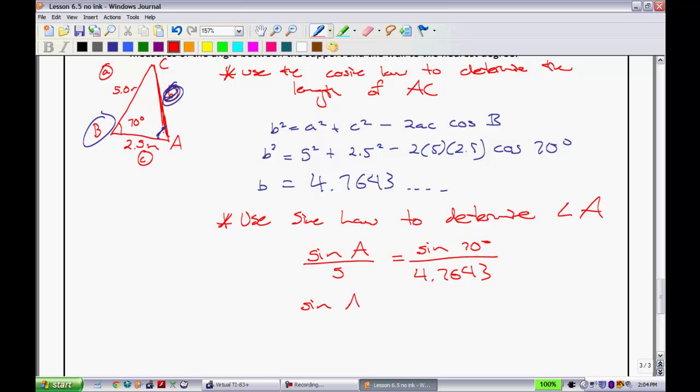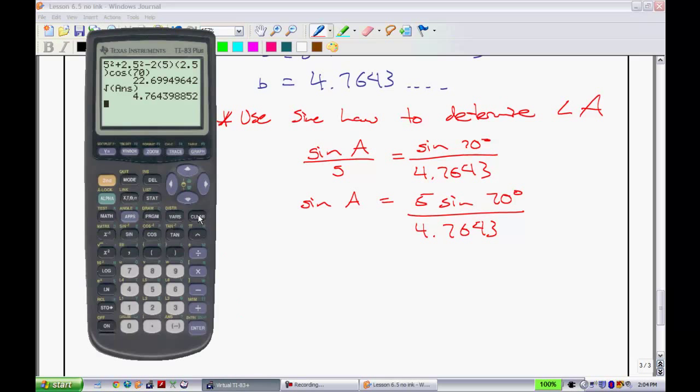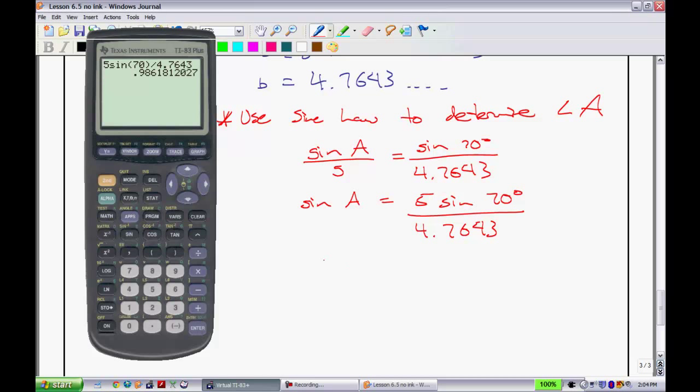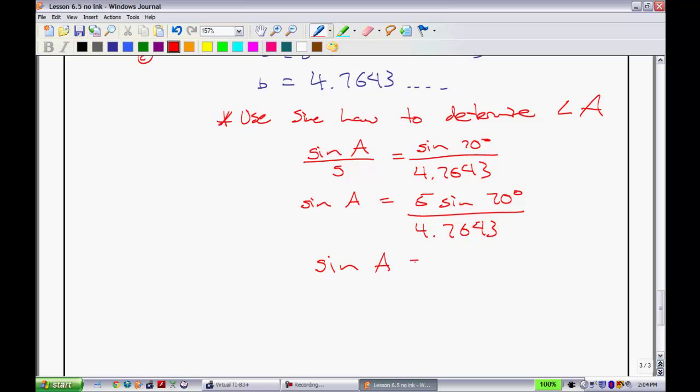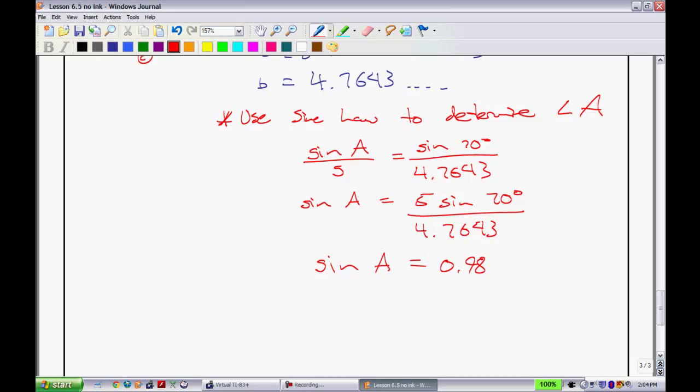In order to get sine of A by itself, I'm going to have to move the 5 up to the numerator. I have 5 times the sine of 70 degrees, all over 4.7643, like so. I'm putting this into my calculator. 5 times the sine of 70 degrees, all divided by that 4.7643. I'm going to hit equals.